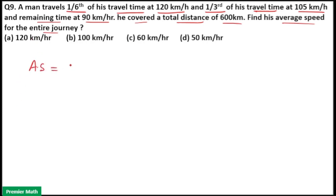Here average speed is equal to total distance divided by total time. Here total distance is 600 km. So distance is equal to speed into time.